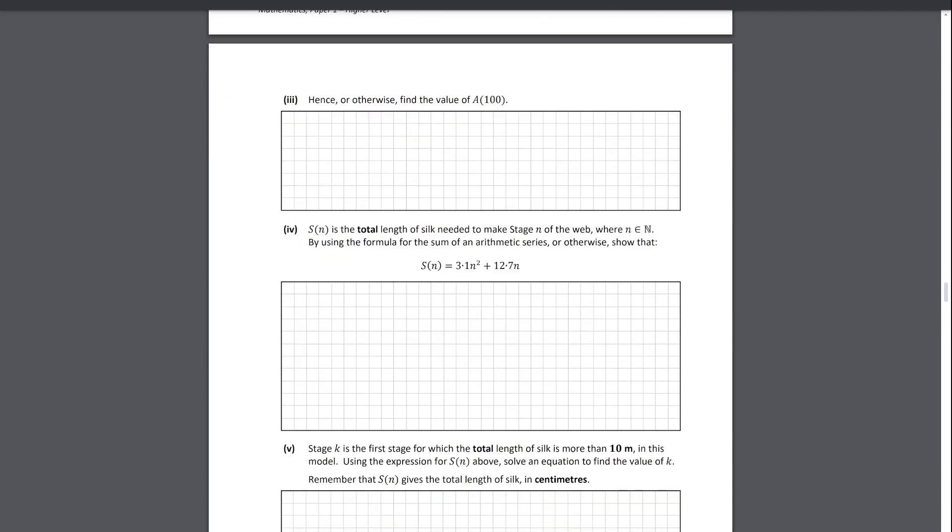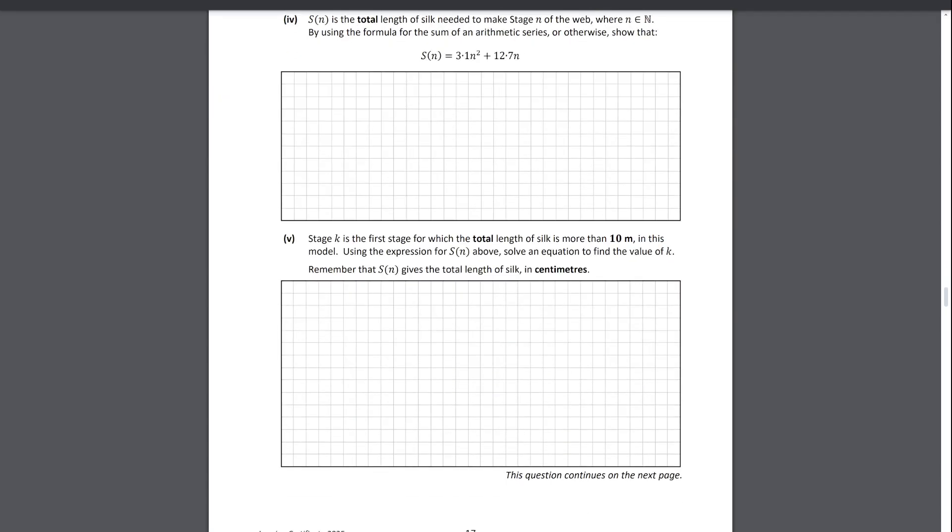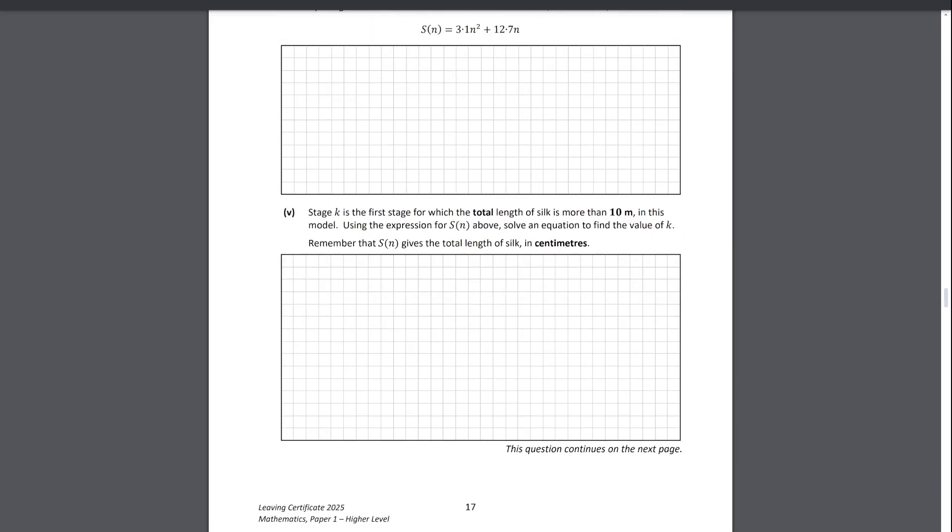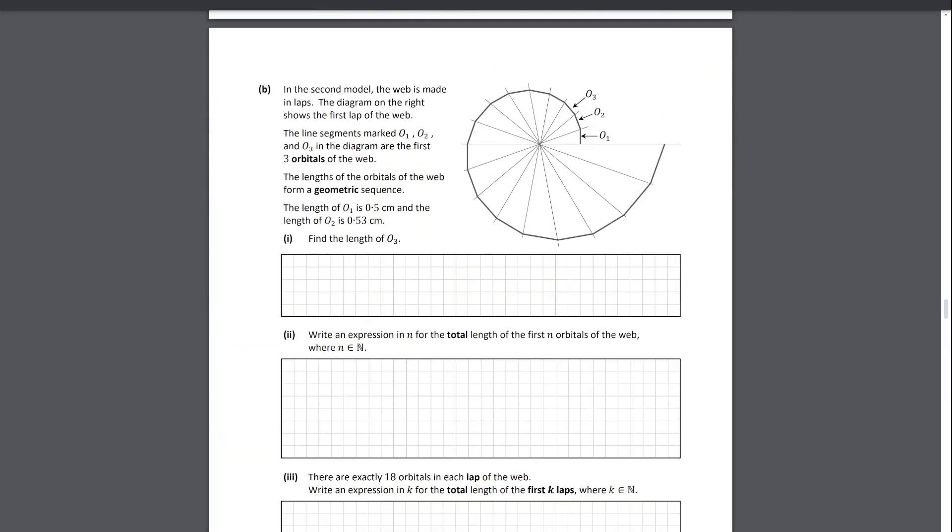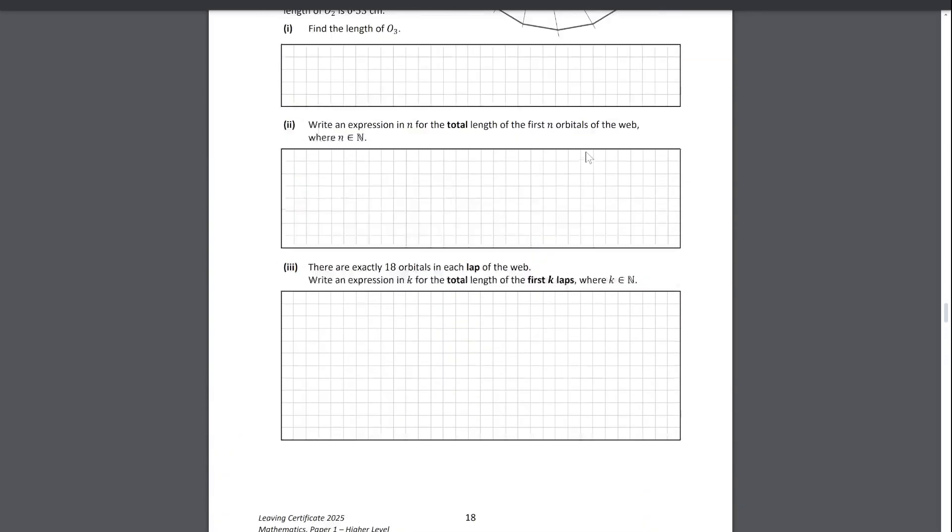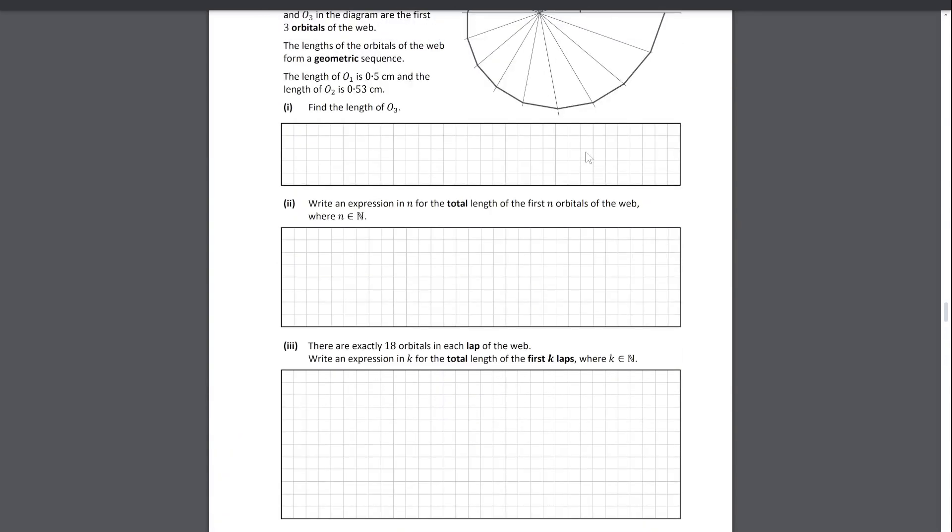Then talking about a sum of an arithmetic sequence and then just a standard kind of follow-up question with regards to a sum that will lead you to form a quadratic. Part b: very nice little diagram. Any sort of spiral shapes I do quite like. This is again, it talks about a geometric series. In fact, all you really need are these two values - you don't actually need the diagram at all to help you here. It's just trying to get you with this weird nomenclature of orbitals and laps or whatever.